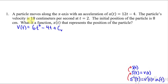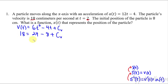They gave us that the velocity is 18 centimeters per second at the time of 2. So we can say the velocity is 18 if we plug a 2 into the time. So 2 squared is 4, times 6 is 24, minus 2 times 4 is 8, plus this constant of velocity. 24 minus 8 is 16. Subtract that over, we get 2. So when you solve this, that constant is a 2.